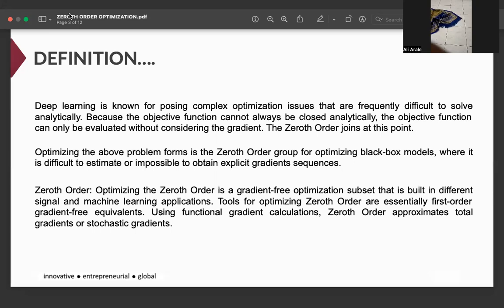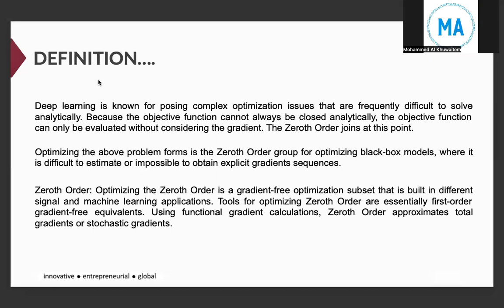Zero-order is the gradient-free optimization subset that is built in different signal and machine learning applications. Tools for optimizing zero-order are essentially first-order gradient-free equivalents, using functional gradient calculations. Zero-order approximates total gradients or stochastic gradients.